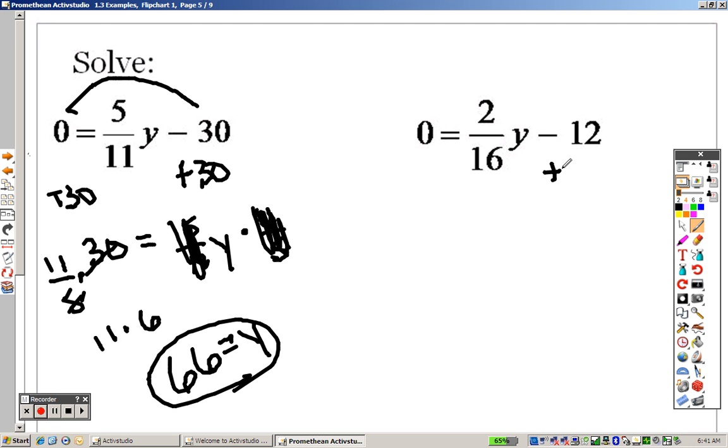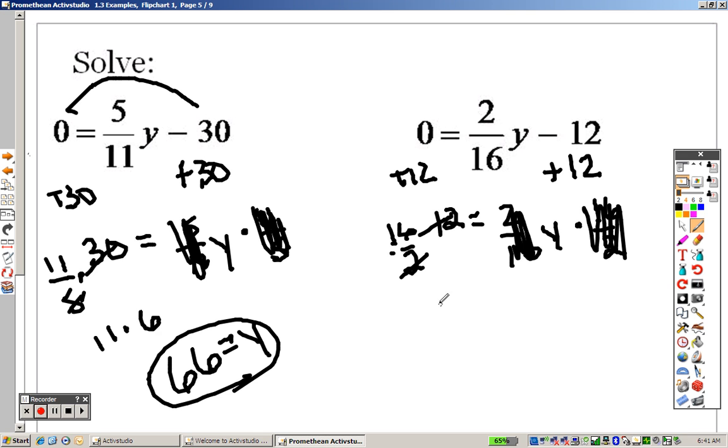Over here, it's minus 12. So I'm going to add 12 to both sides. So I get 12 equals 2 over 16y. So to get rid of the fraction, once again, I multiply by the reciprocal. Those cancel out. So that means I can divide both those by 2. So I get 16 times 6 equals y. So 16 and 6. That's 6. 1, 2, 3 is 9. So I get 96 equals y.